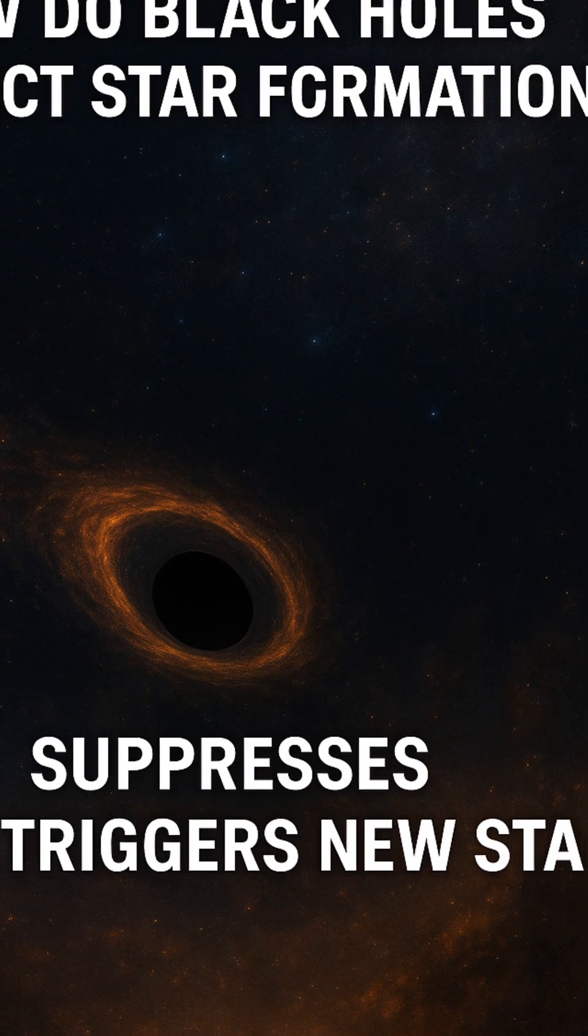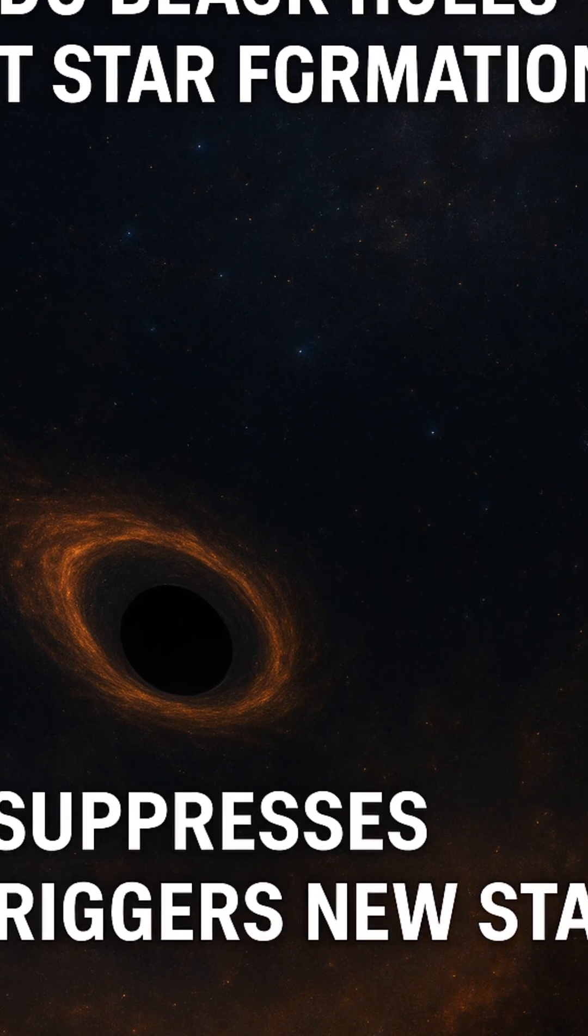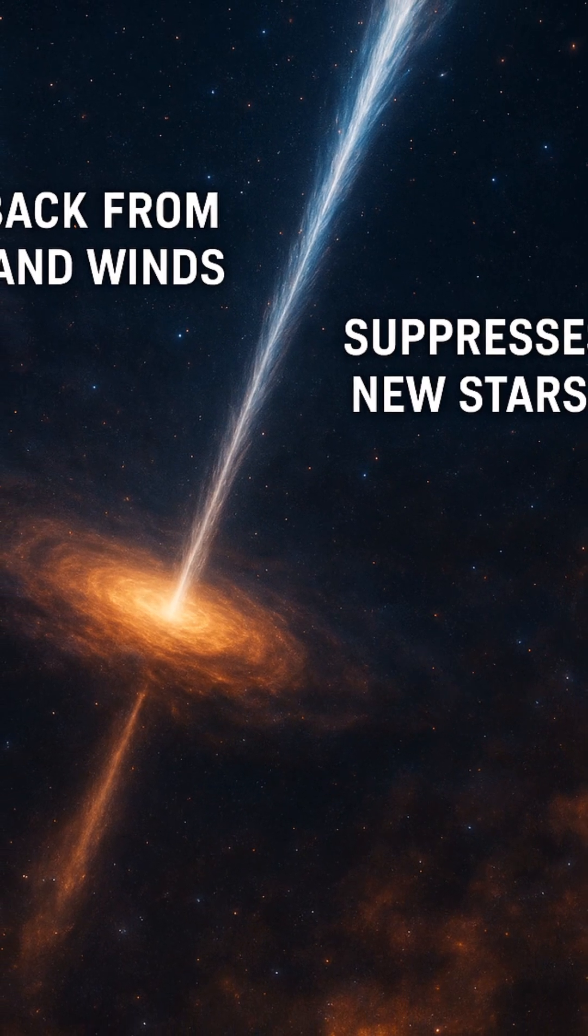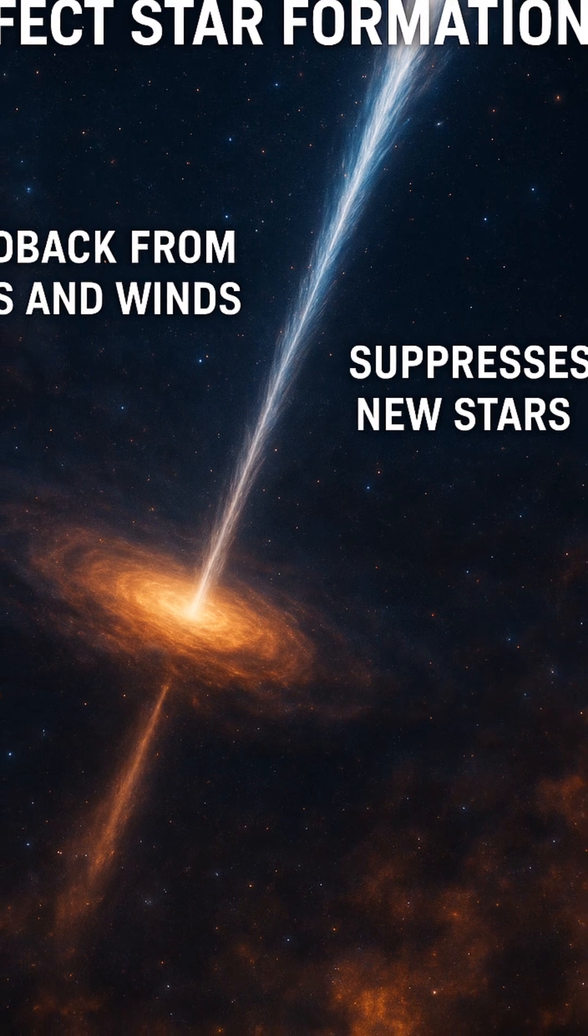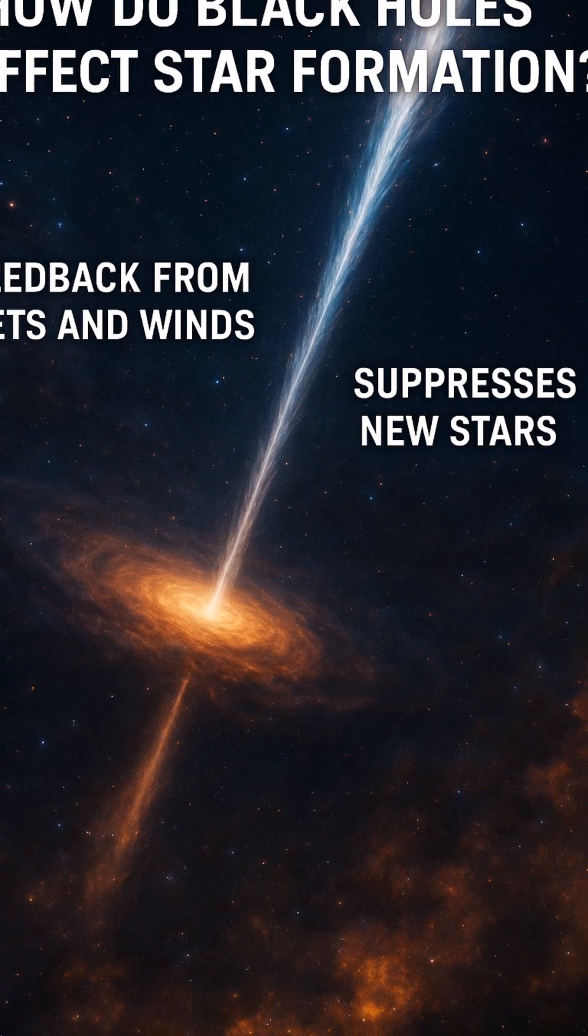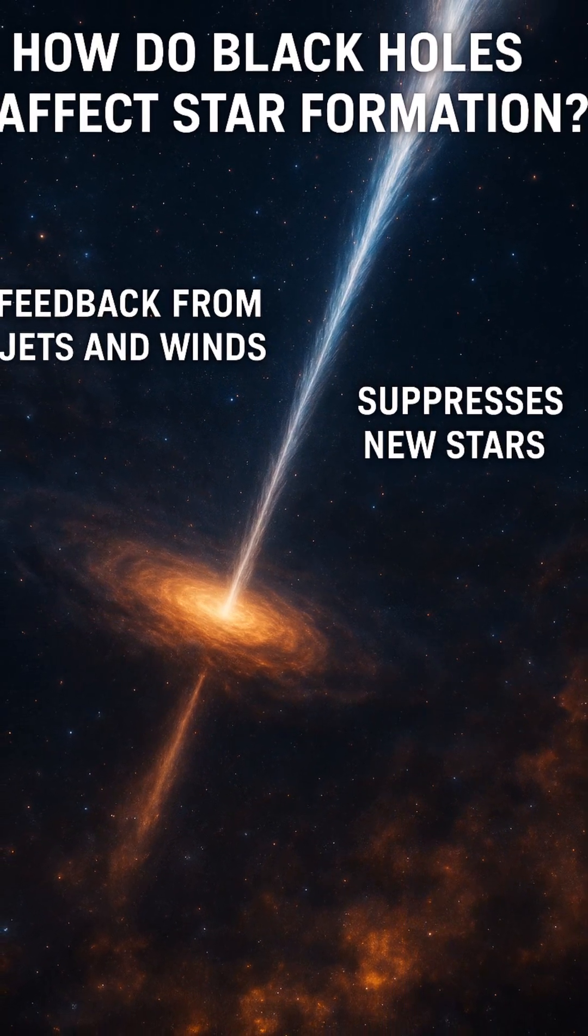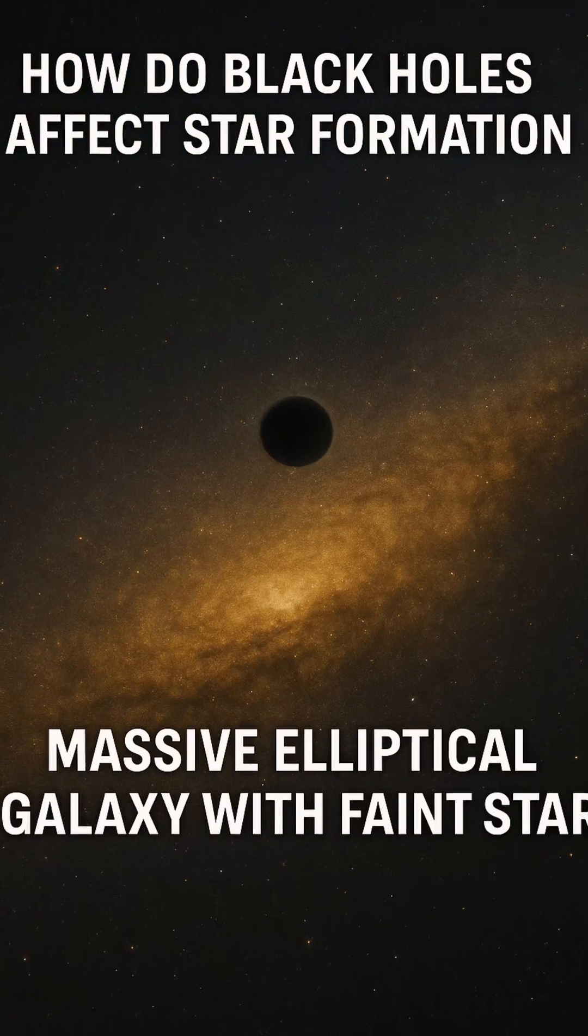Observations of massive elliptical galaxies, which host dormant black holes and show little ongoing star formation, suggest that past feedback may have quenched their ability to produce stars.